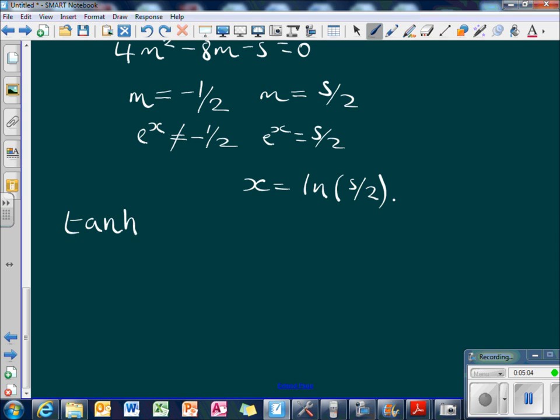Very quickly go through that. So tanh x equals e to the x minus e to the minus x all over e to the x plus e to the minus x. And just put them in. So you would get 5 over 2 minus 2 over 5 all over 5 over 2 plus 2 over 5.